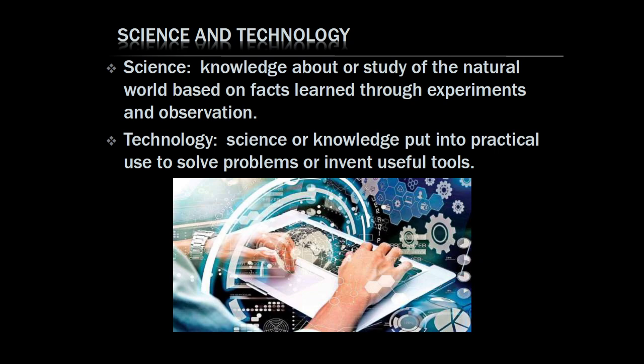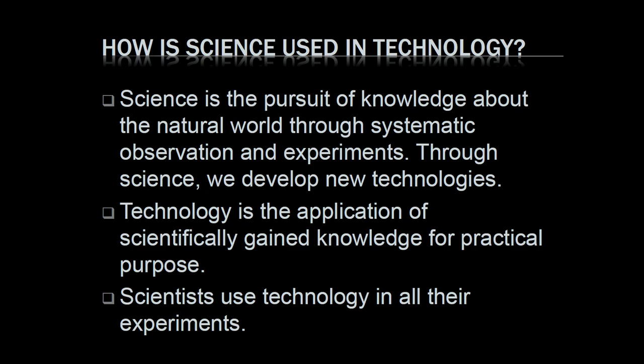Decades ago, what people used to write on were leaves of plants, like banana leaves. But because of technology, they invented paper as an intermediate medium. So every useful tool that gives another useful purpose is a technology. How is science used in technology?